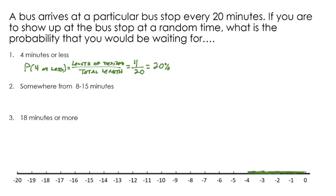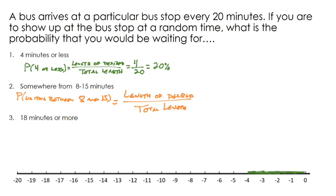For the probability of waiting between eight and 15 minutes: the length of the desired segment over the total length. If you're waiting 15 minutes, you show up at negative 15; if you're waiting 8 minutes, you show up at negative 8. That desired segment has a length of 7 minutes out of a total of 20. So 7/20 gives a 35% chance of waiting somewhere between eight and 15 minutes.